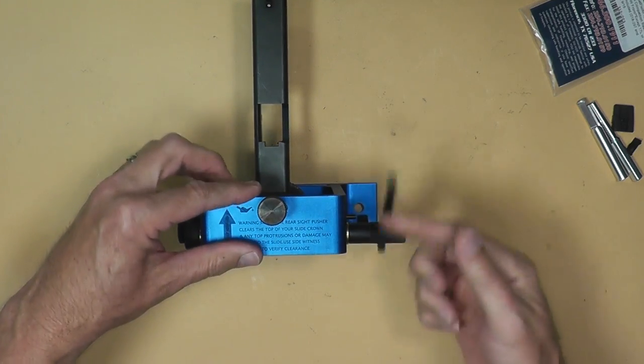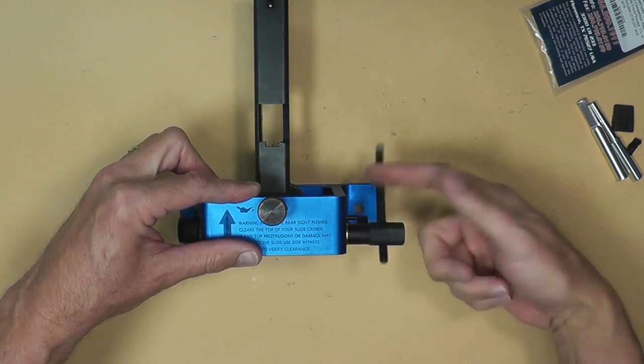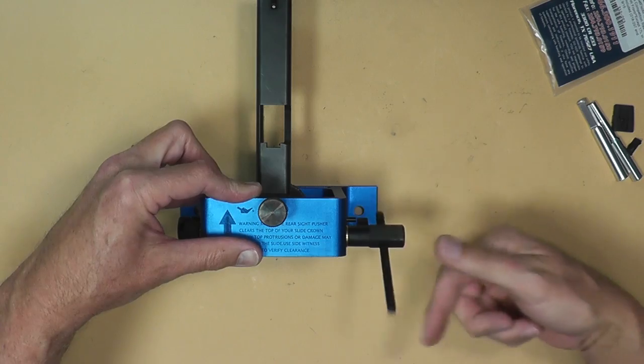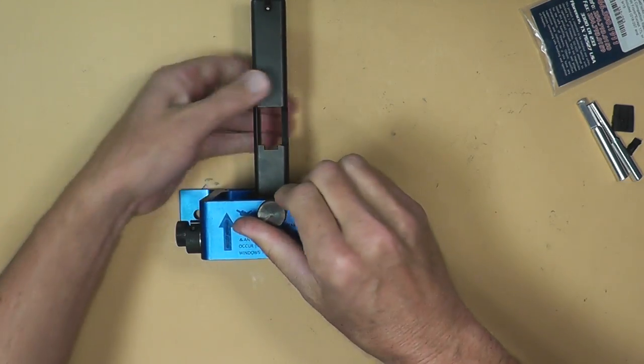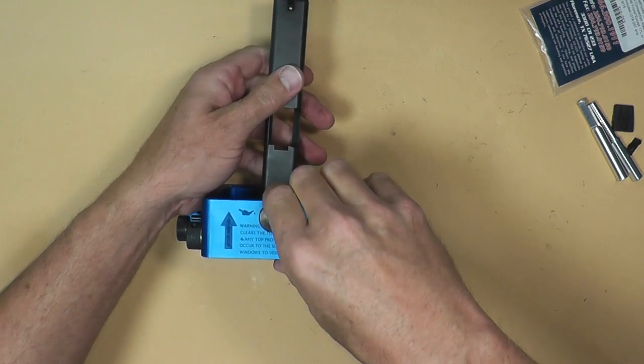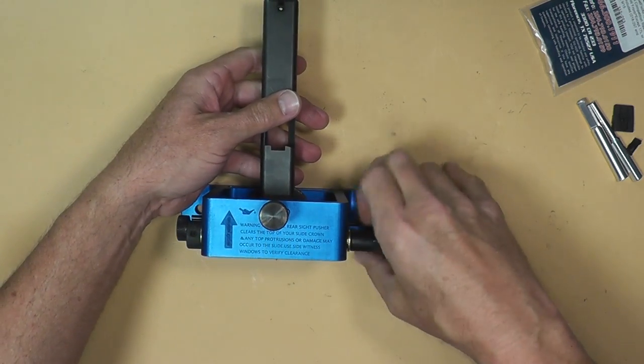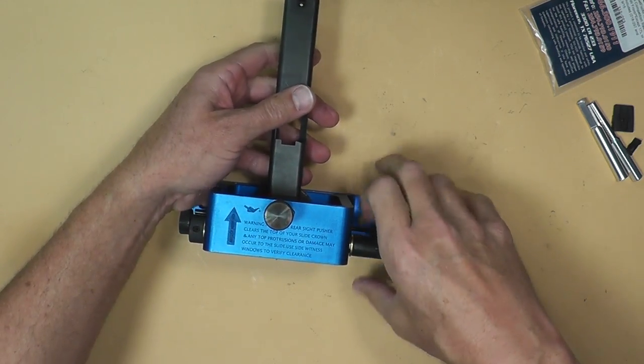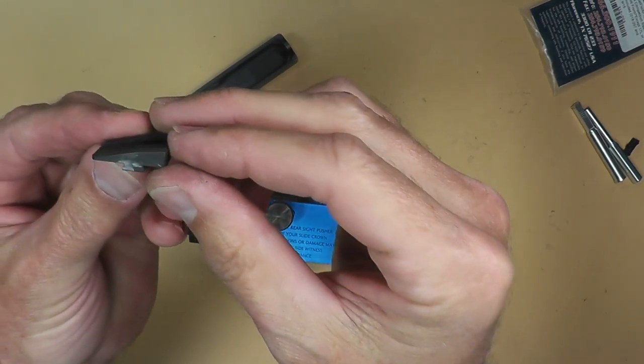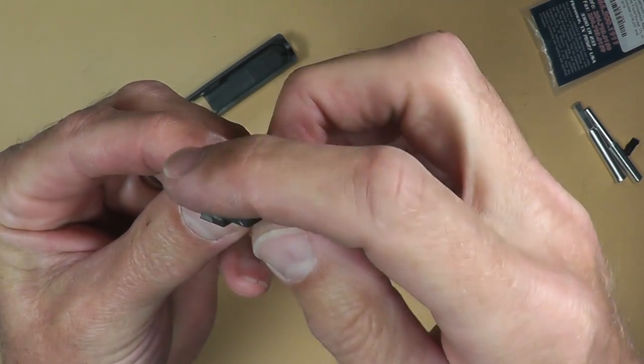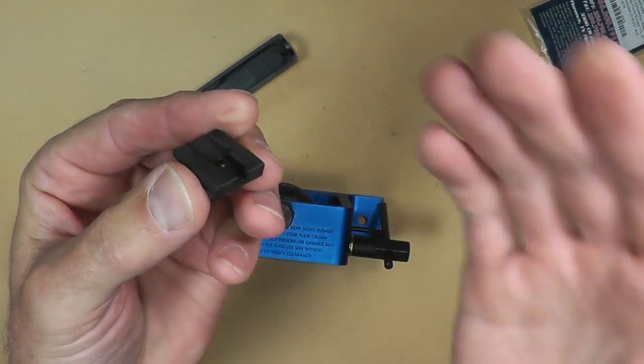Now we're going to take, I'm going to put this back in the center. And I'm going to take our slide out and we'll test fit our Dawson rear sight, our rear mounting. So this has got like a carry profile if you will. I don't need an adjustable sight.